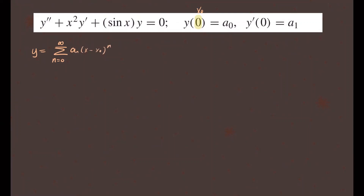Since x₀ is 0, we can replace that right here, and this simplifies our solution form to the sum of a_n x to the n. If you write out a few terms of this solution, the first term will be n equals 0, so you'll have a₀ plus a₁x plus a₂x² plus a₃x³ plus a₄x⁴ and so on.